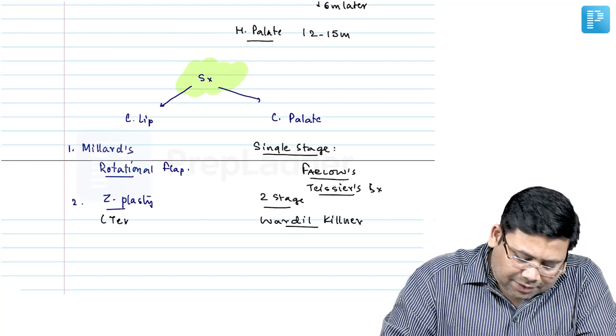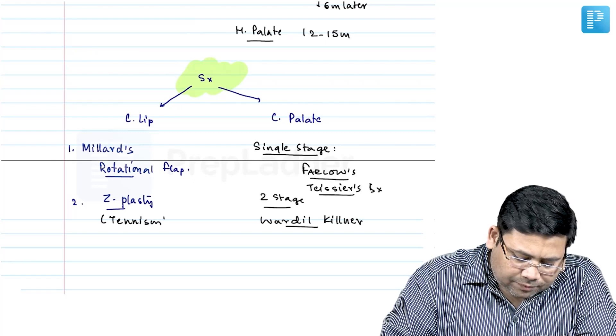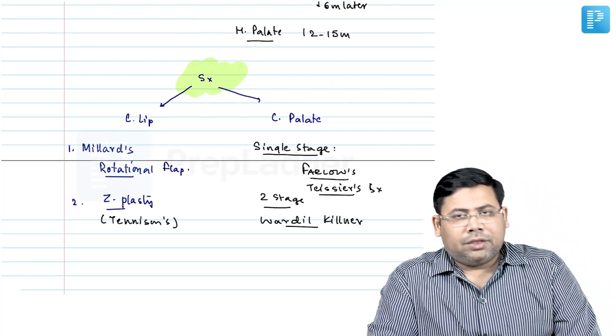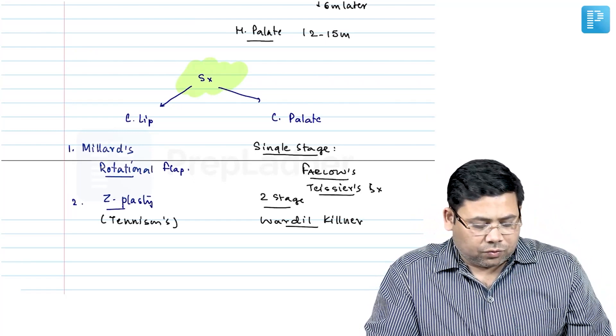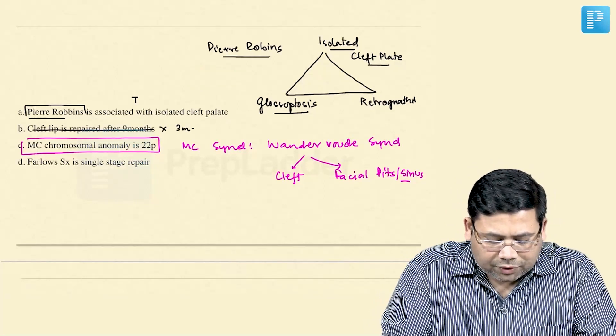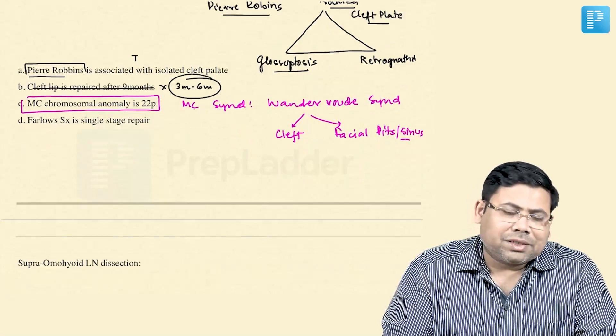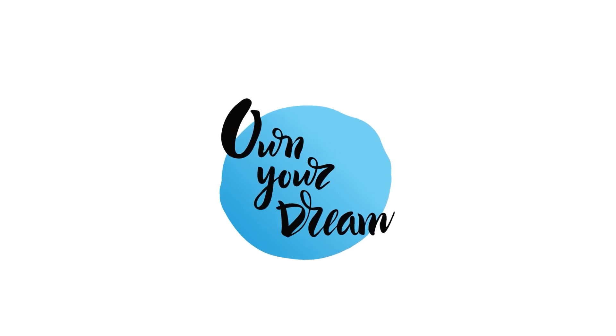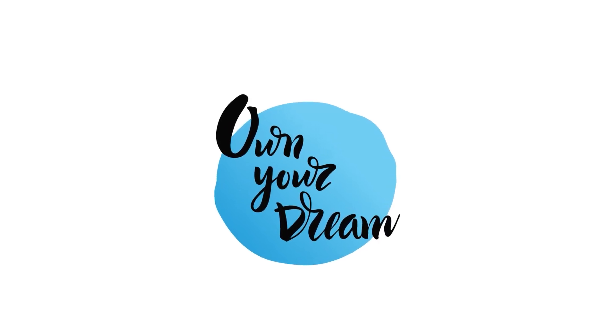Tennyson's Z-plasty or Millard's rotational flap. Let us go to this question. Cleft lip is repaired at nine months? Never. It is repaired at three to six months. The best time to start is as early as three months.